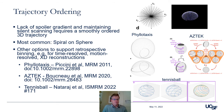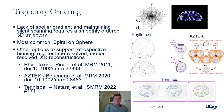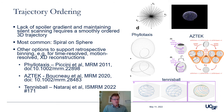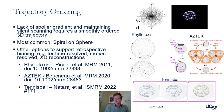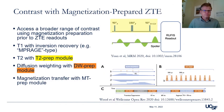For both maintaining the lack of a spoiler gradient and enabling silent scanning, you want to use a smoothly ordered or smoothly varying 3D trajectory. The spiral-on-a-sphere type 3D radial trajectory is the most common, but there are other useful options important for retrospective binning in time-resolved or motion-resolved XD reconstructions — including the phyllotaxis trajectory, the Aztec trajectory, and the tennis ball trajectory presented at this meeting.